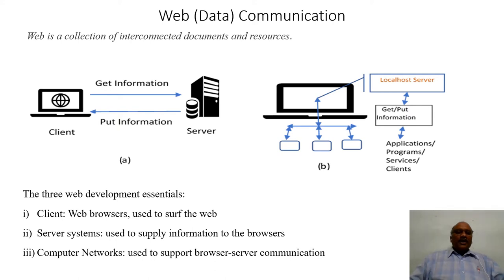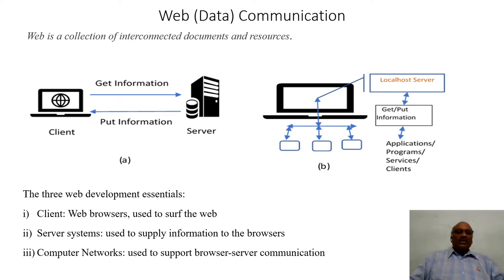As far as web development is concerned, it requires web communication which includes the essentials such as clients. At one end we have components related to requesting information located at a different place, with the help of browsers running on these clients. The browser is an application program which runs on the client and helps us retrieve information located elsewhere. On the other hand, we have server systems which address the requests made from different clients and supply the requested information. Supporting this client-server communication, we have a computer network with various entities and protocols running in the process of exchanging information between clients and servers.